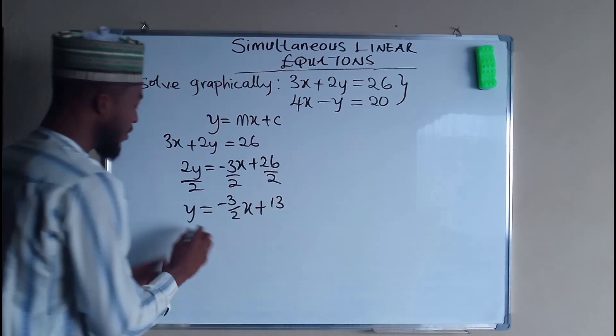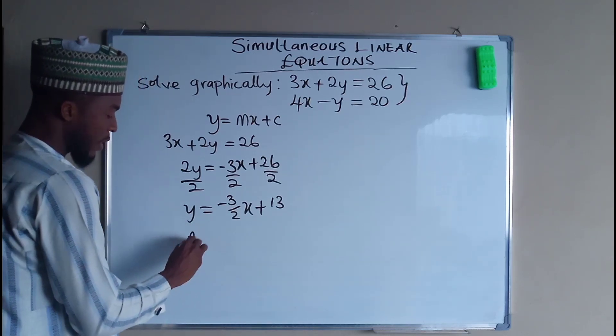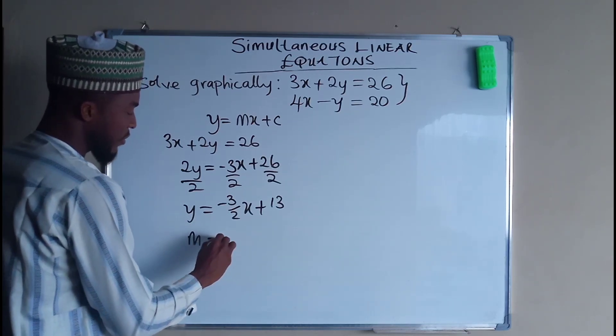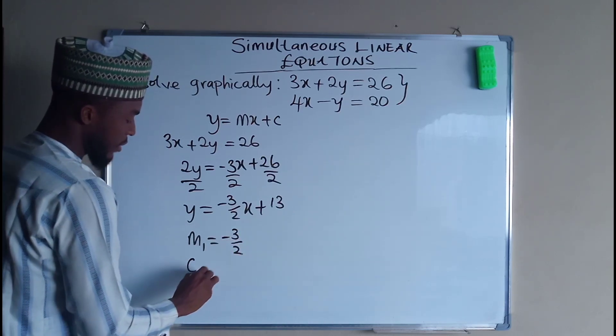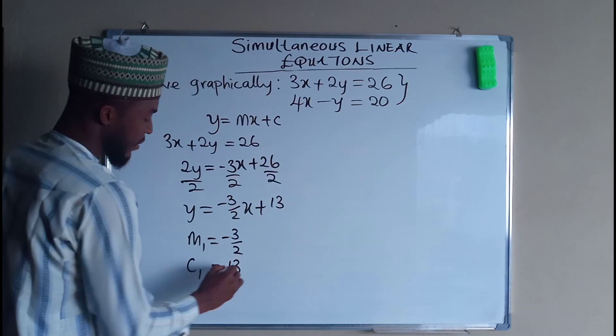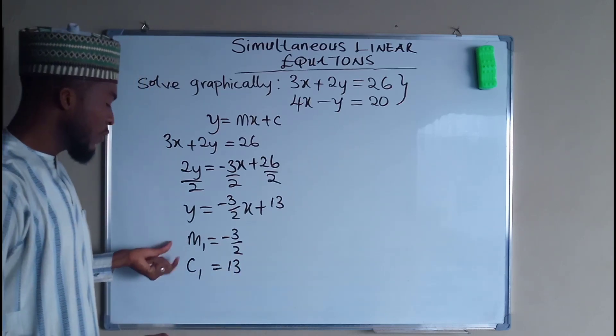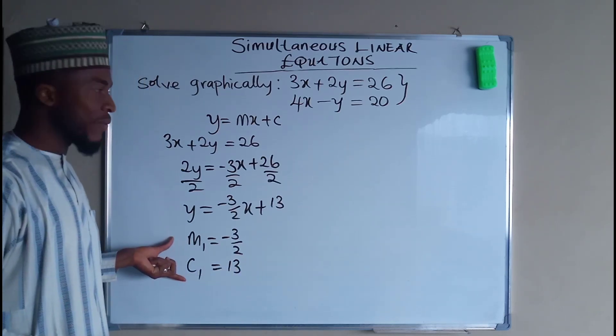Then on this equation number 1, our m1 is equal to negative 3 over 2, and the c1 is equal to 13. These are the 2 terms we need in order to plot the graph.